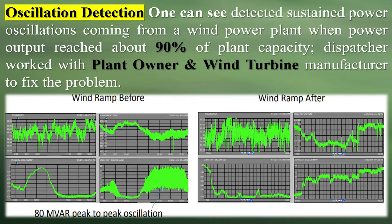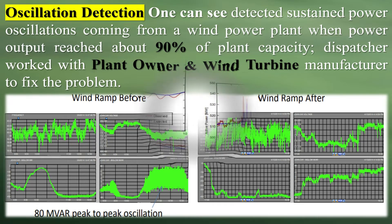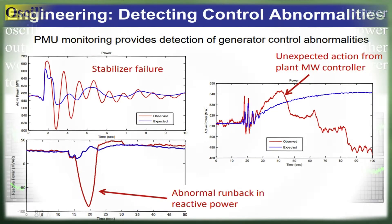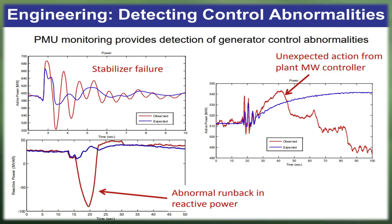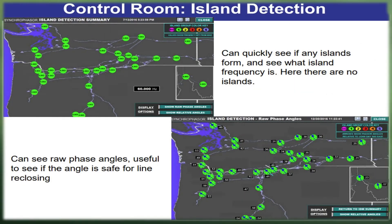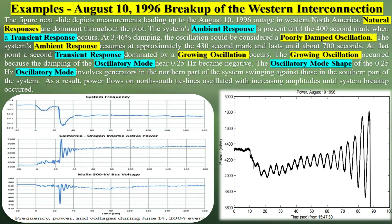Let's see oscillation real-time examples. Growing oscillations were a contributing factor that led to the August 10, 1996 WECC blackout. Growing oscillations over a wide area are rare but can have significant reliability implications when present. Below are three single-mode simulated natural oscillations with varying levels of negative damping.